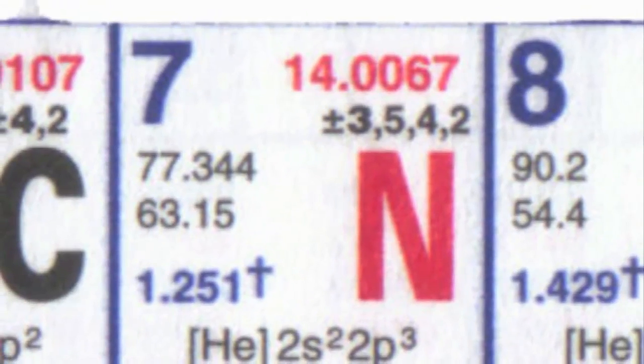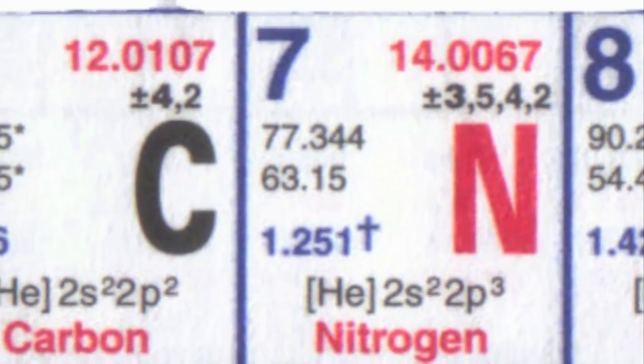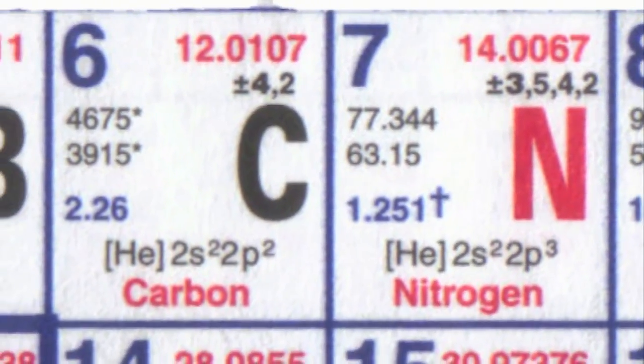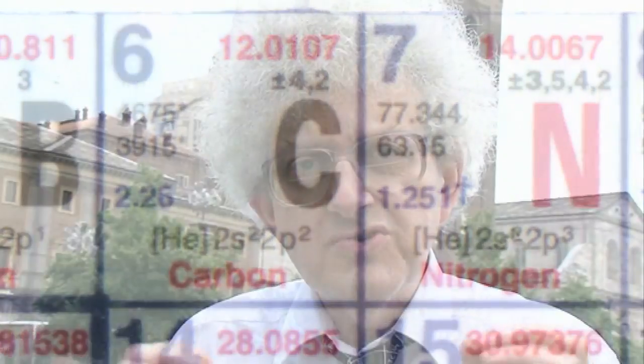Each nitrogen atom has weight 14, and every so often — really quite rarely — a cosmic ray comes out of space and hits a nitrogen-14, transforming one of the neutrons, the neutrally charged particles, into a proton and electron. And this turns nitrogen-14 into carbon-14.